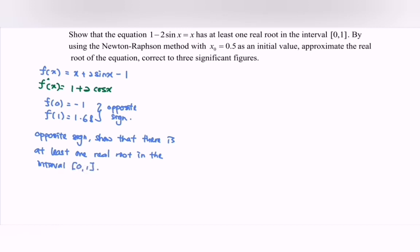Next, by using the Newton-Raphson method with initial value 0.5, approximate the real root. We have the formula: x_{n+1} = x_n - f(x_n)/f'(x_n).